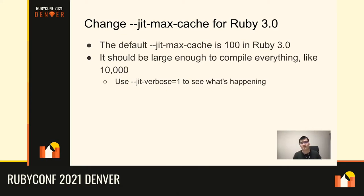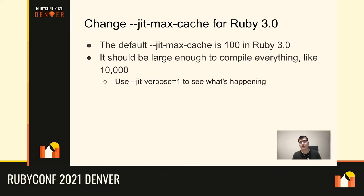The most important thing is changing the --jit-max-cache option. The default is 100 in Ruby 3.0, but real-world Rails applications typically have far more than 100 methods. Even a very simple scaffold Rails app has around 1,000 methods. In real production applications it could be thousands. So you need to increase jit-max-cache — I use 10,000 — to make sure everything gets compiled.